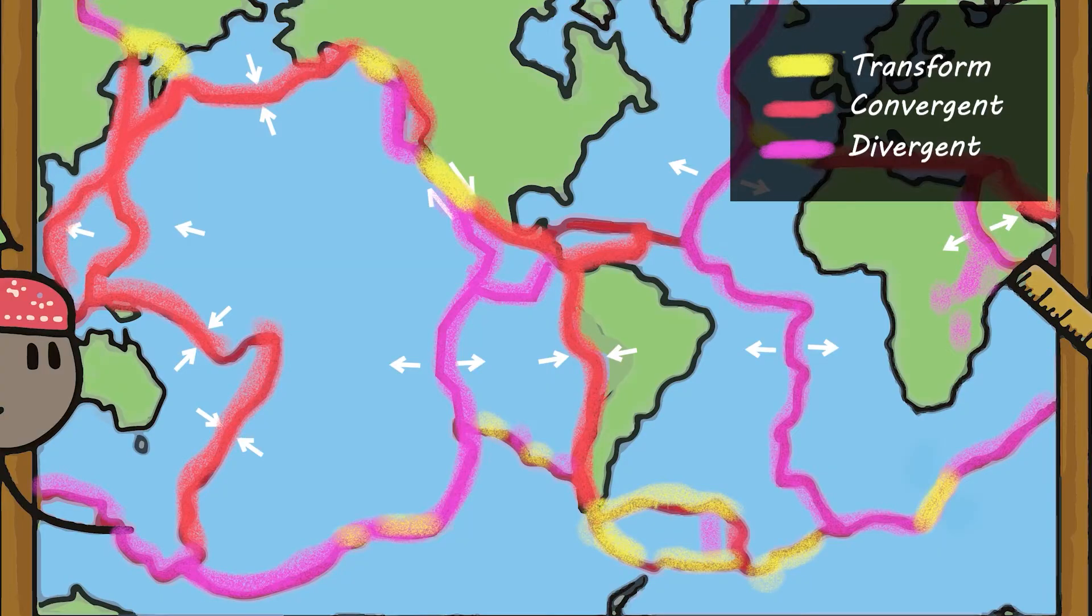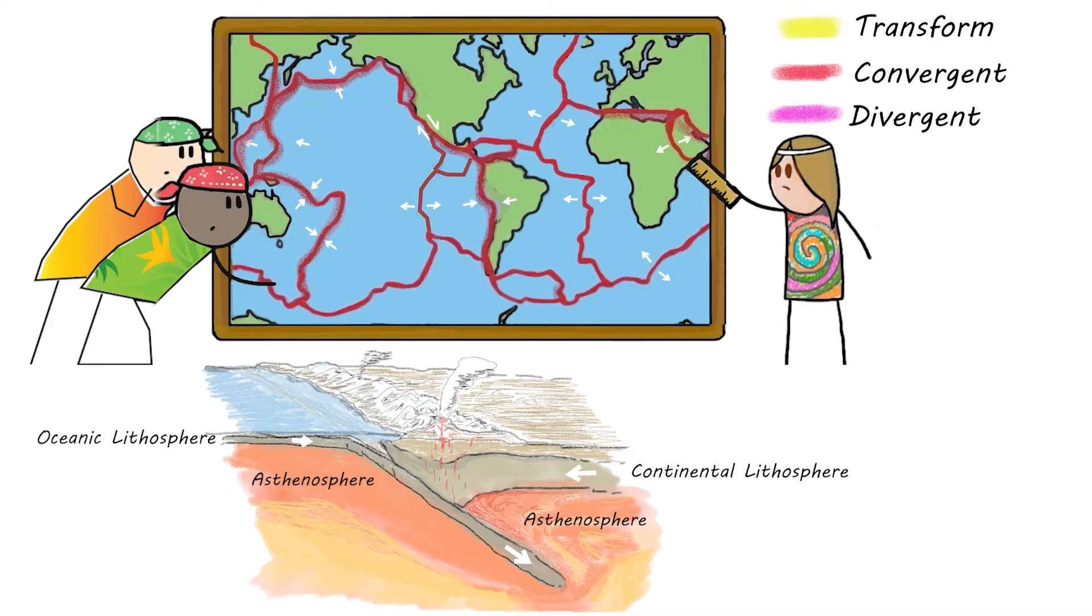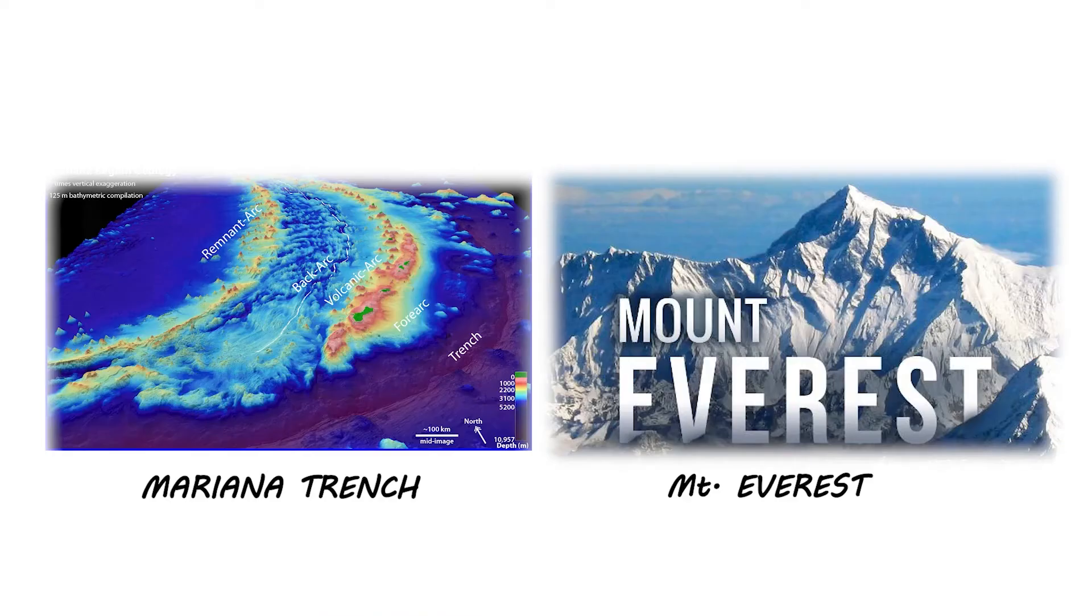There are three types of plate boundaries. Convergent plate boundaries occur where two plates move toward each other. These are where the highest and the lowest places on Earth can be found, such as Mount Everest and the Mariana Trench.